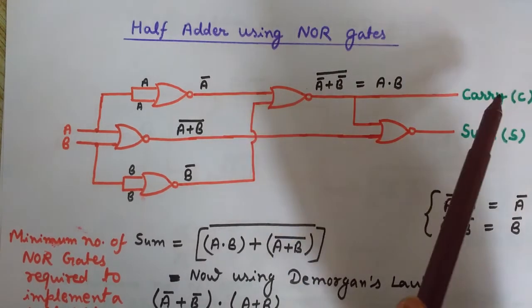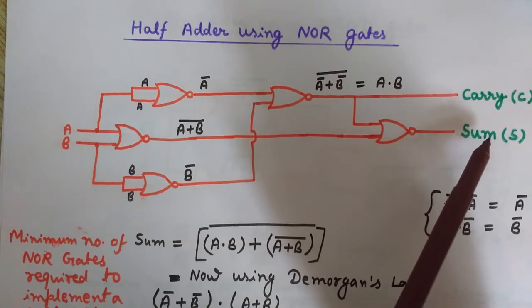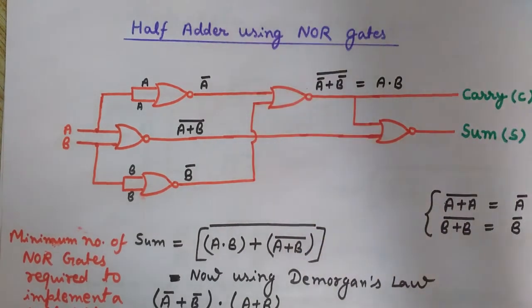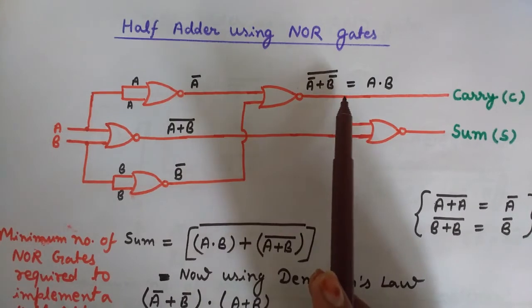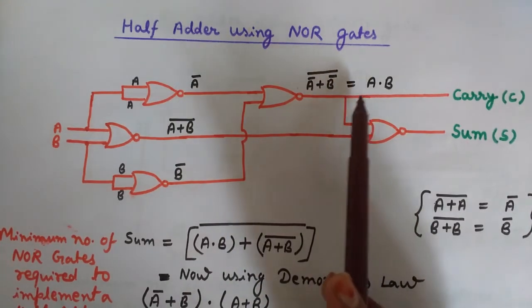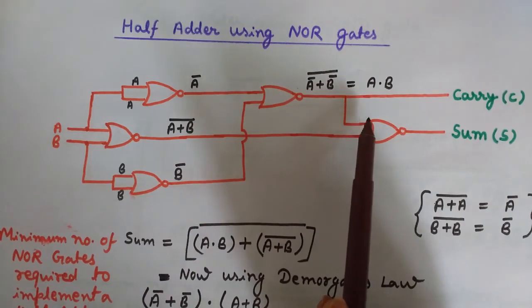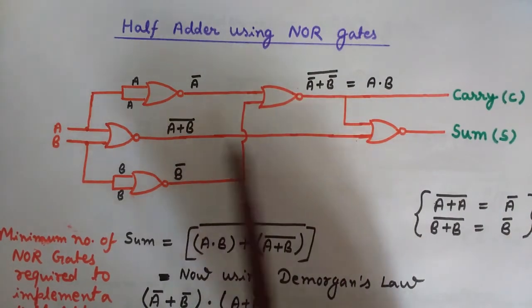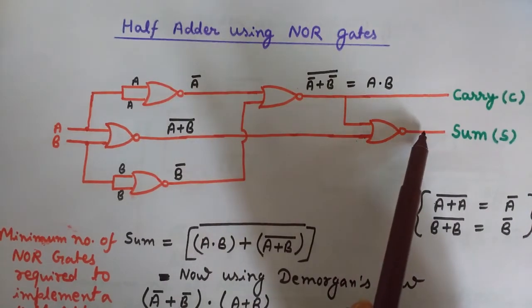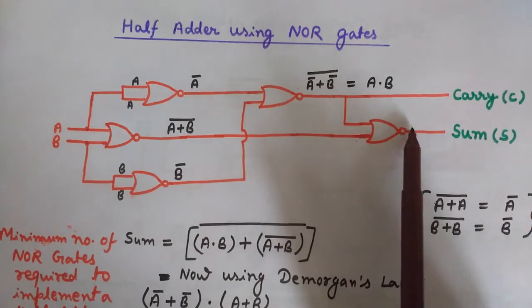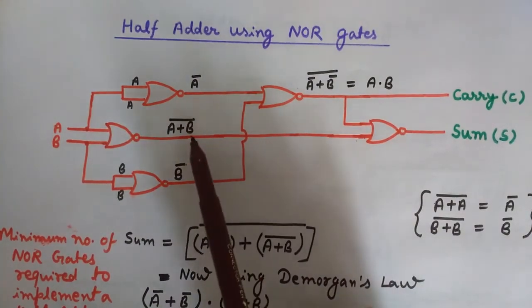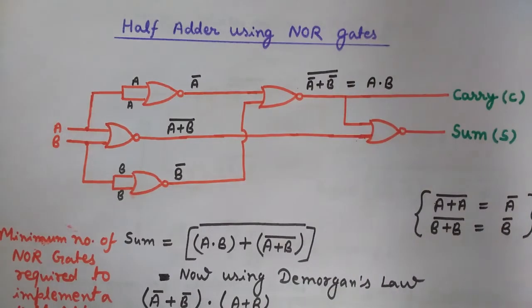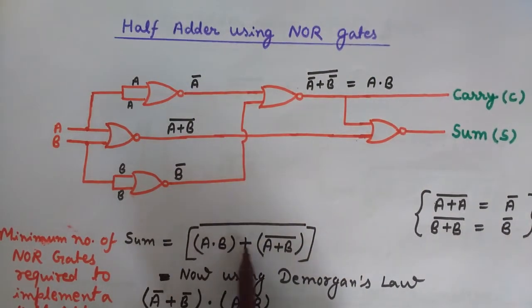Now it's time to see the Sum part — how we can get the Sum expression using only NOR gates. Observe the inputs to the final NOR gate: the first input is A·B (the carry expression derived earlier), and the second input is (A+B)̄. We perform the NOR operation on these two inputs — first OR them and then complement.